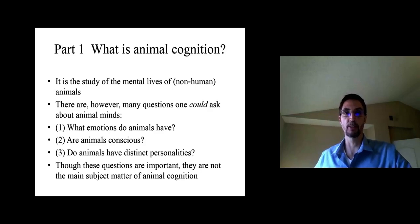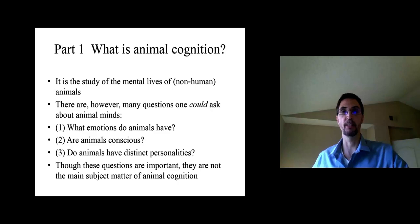So in the first part we're going to address the question of what is animal cognition. So what is this field about? In general, animal cognition is a study of the mental lives of non-human animals. But it's more specific than that, because there's many questions that one could ask about animal minds.